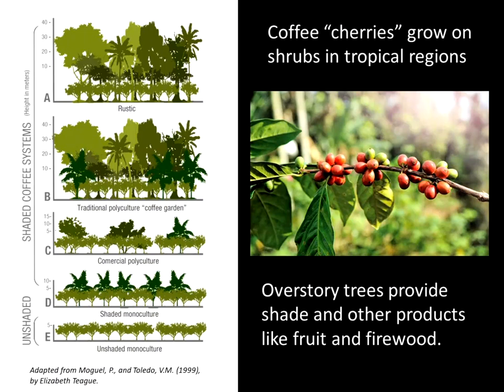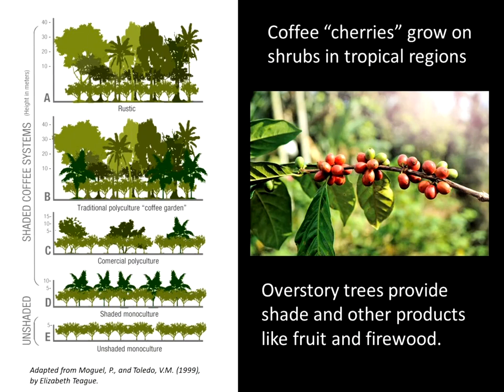You might not even be familiar with how coffee is grown, but the coffee cherries grow on a shrubby plant in tropical regions. These shrubby plants can be grown in a monoculture — if you look at the figure on the left-hand side near the bottom, you can see what an unshaded monoculture would look like, just a setting with coffee alone. That would not be considered agroforestry because it's only one crop. But the other systems where they're integrating different species are considered agroforestry.